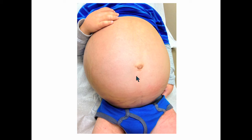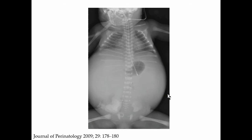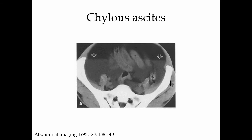He eventually was placed on sirolimus and is doing quite a bit better at this point. Just to show you the issues, this is what chylous ascites looks like in the hand, so to speak — you can see this lake of milky fluid that is engulfing the intestinal viscera on an open resection. This is what it might look like radiographically, and you can see the air-fluid levels present on this imaging as well.